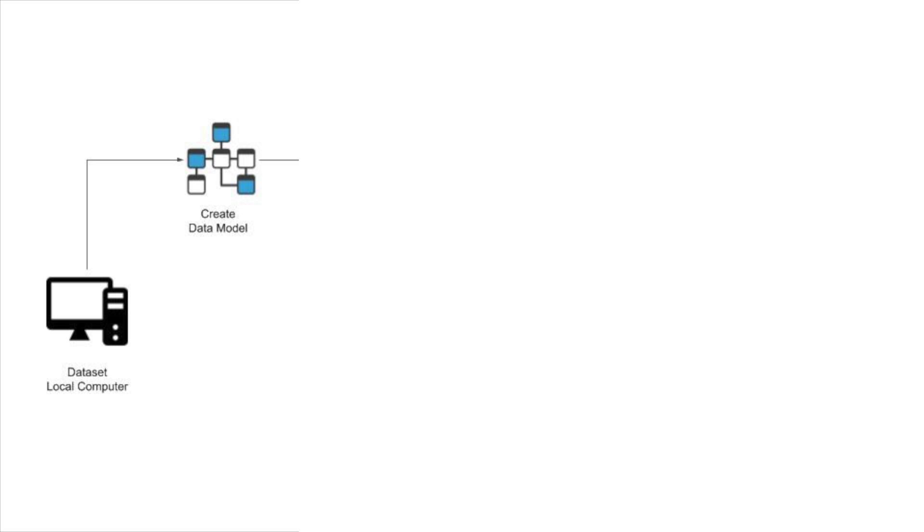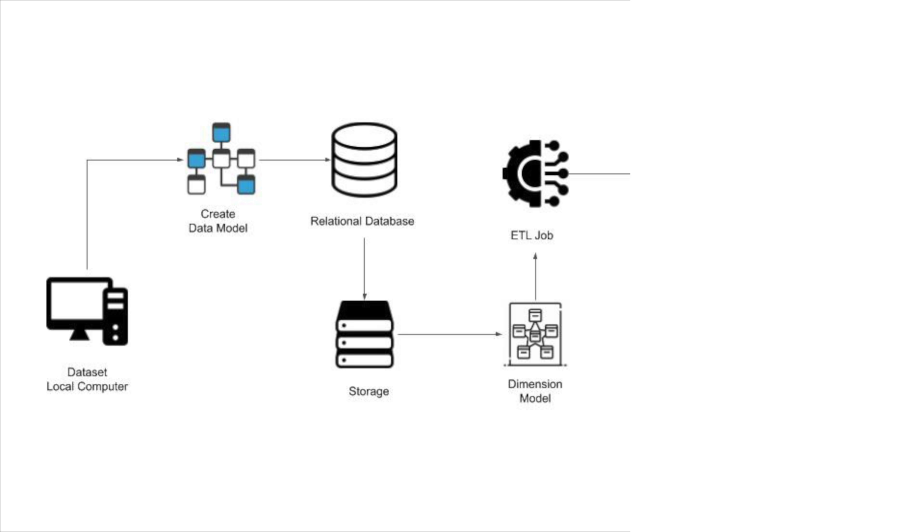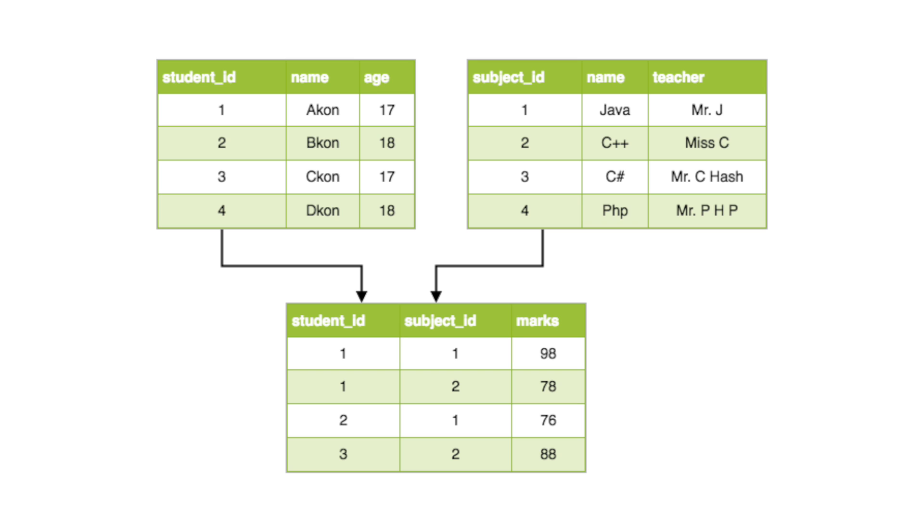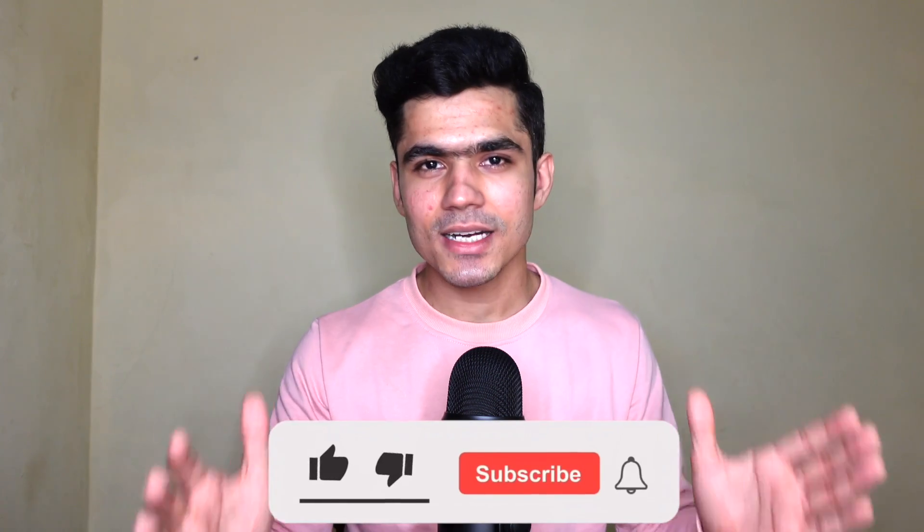Before talking about different datasets, let's understand the basic framework you can apply to build your first data engineering project. This framework can be applied to any dataset you find online. You have a dataset, and you will build a data model — a visual representation of how your data looks. Your data will be stored across multiple files, and the data model helps you understand how those files are connected, what columns they contain, and what primary keys are available.